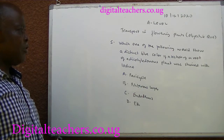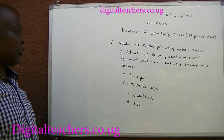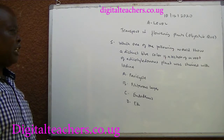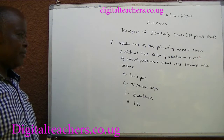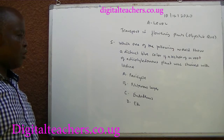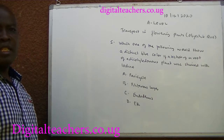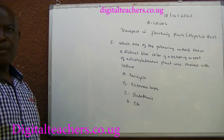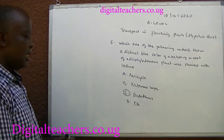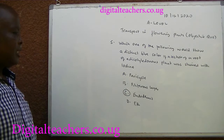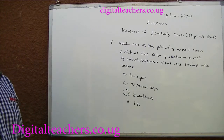Number 5. Which of the following would show a distinct blue color if a section of a root of a dicotyledonous plant was stained with iodine? A. Pericycle. B. Peripheral layer. C. Endodermis. D. Pith. You can pause and answer. The answer is C. Endodermis is where starch is stored. The dicotyledonous plant does not have pith.